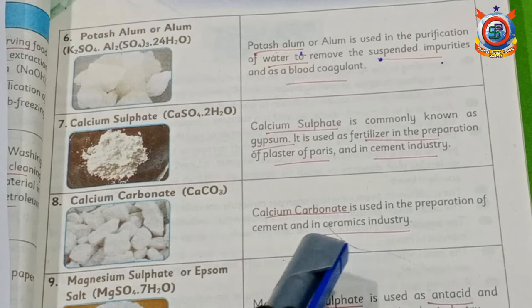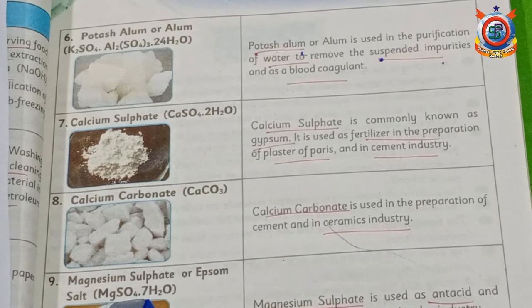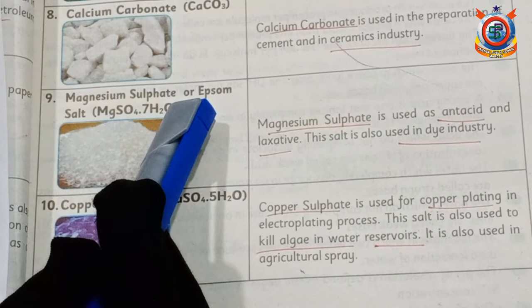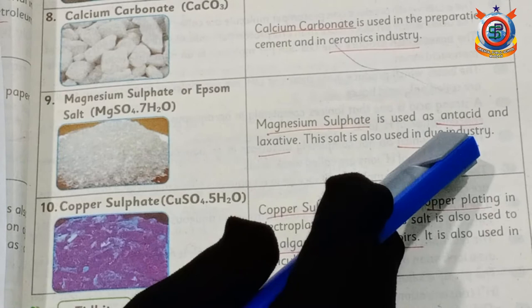Magnesium sulfate, also known as Epsom salt, is used as an antacid and laxative. This salt is also used in the dye industry.